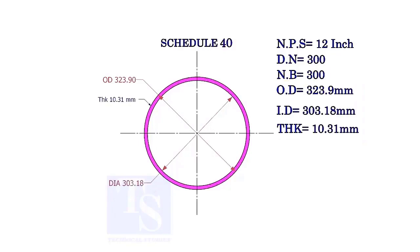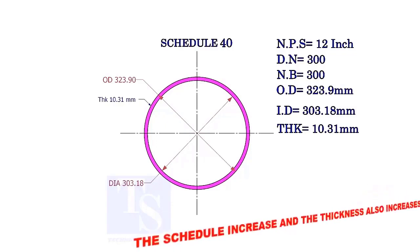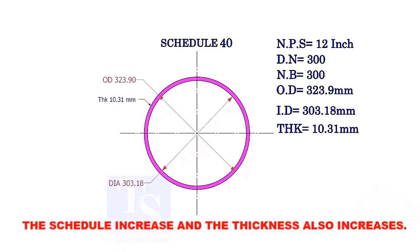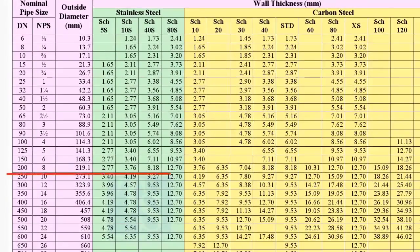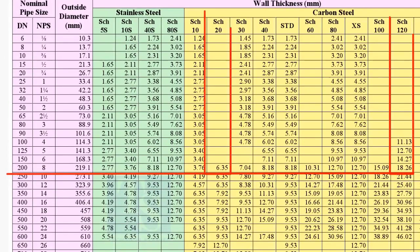Let us check the dimensions of the same size pipe with a higher schedule. As the schedule increases, the OD remains constant, the ID decreases, and the thickness increases. Compare the thickness of an 8 inch pipe in the chart — you can see the thickness of the pipe increases as the schedule increases.